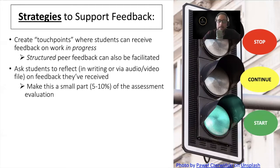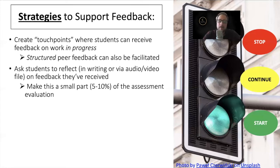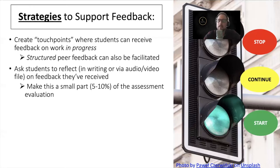Another strategy is to ask students to reflect on the feedback that they received. One of the common barriers to the feedback loop is that students simply aren't investing the time in reading and interpreting it. So what if we facilitate some kind of opportunity or incentive for them to do exactly that? We might set up something on the course shell online where students reflect on the feedback they received — in writing, through an audio file, or through video — shared with a group or with you directly. This activity can be rolled into the evaluation criteria of the assignment, perhaps constituting five to ten percent of the grade, inspiring students to actually read, reflect on, and respond to the feedback.